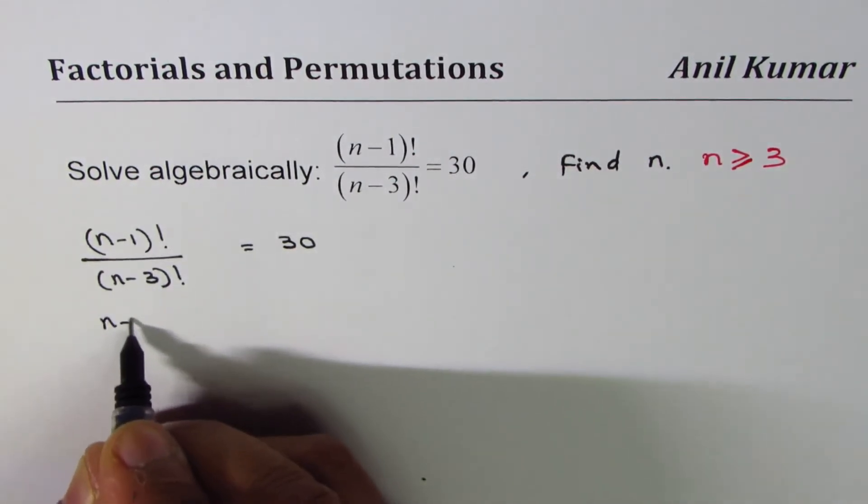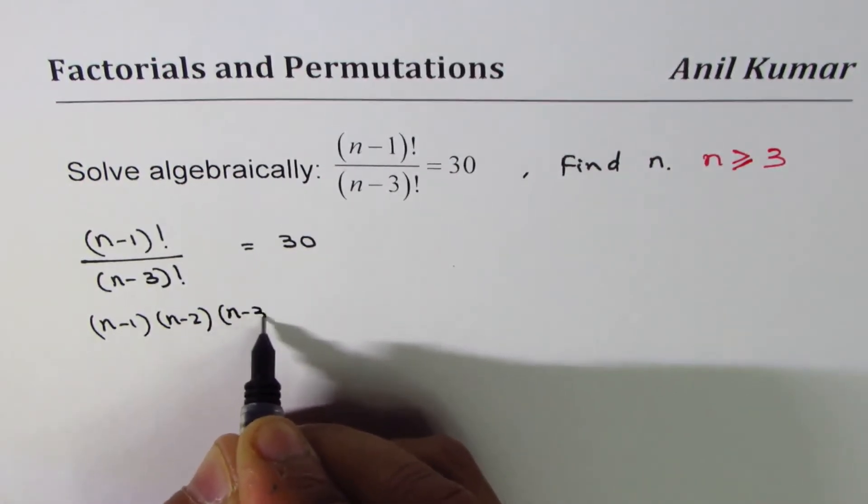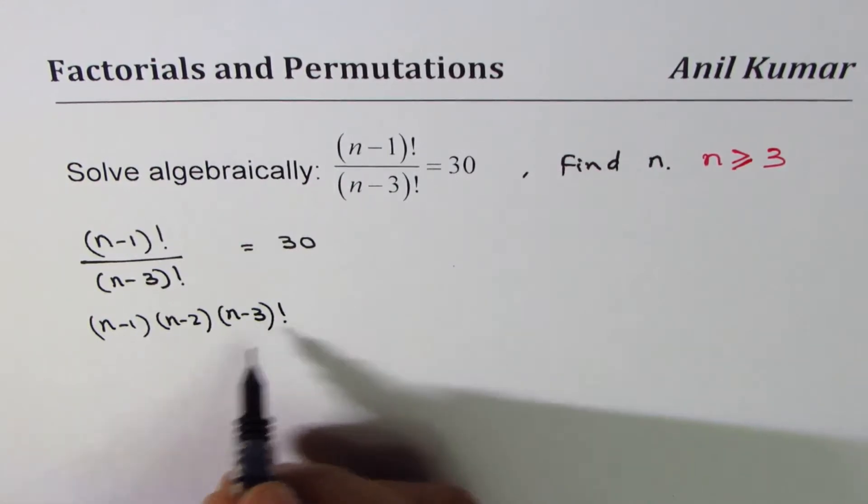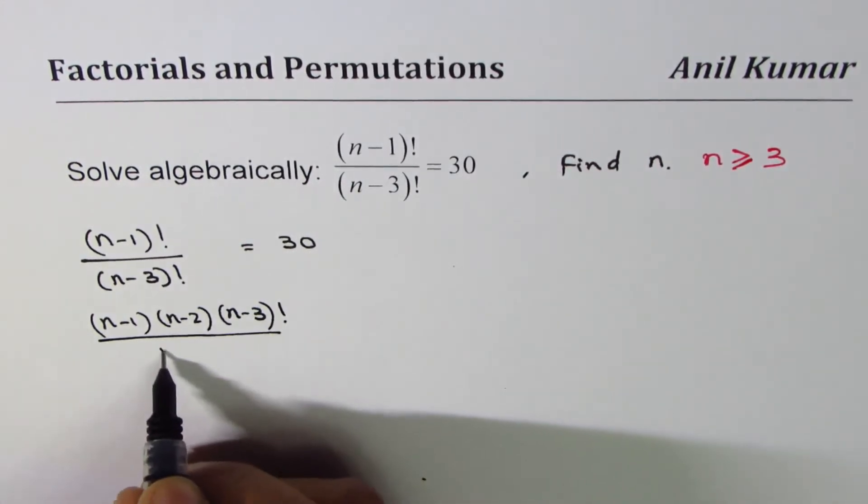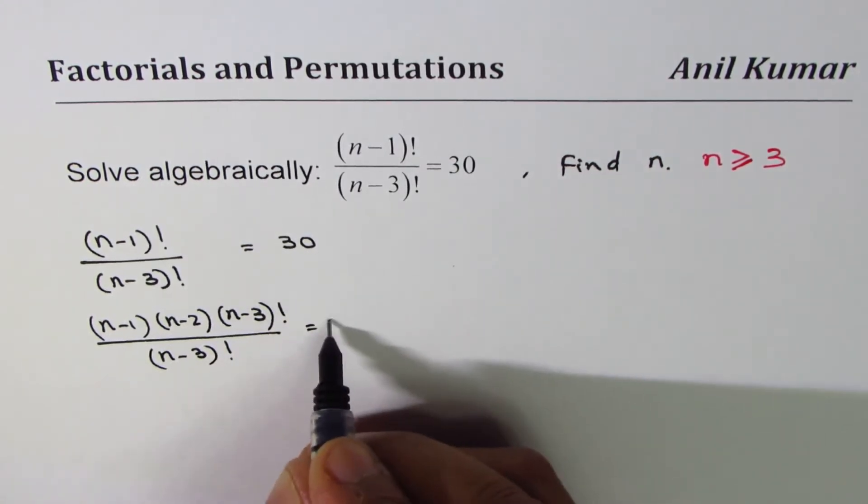So at this stage we can write this as (n-3)! divided by (n-3)!. Is it okay? Equals to 30. Now (n-3)! divided by (n-3)! cancels.